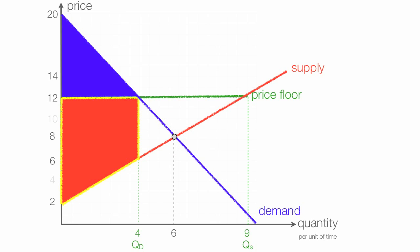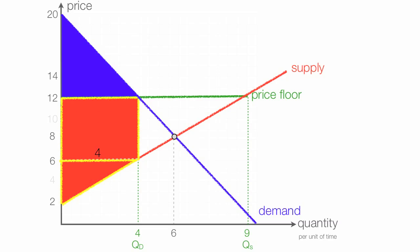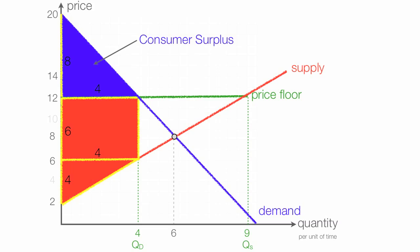I can calculate the area of the triangle, the rectangle, and the other triangle. The base of the triangle is 4, which is quantity demanded. The height of the triangle is 6 minus 2, or 4. The height of the rectangle is 12 minus 6, or 6. And the height of the blue triangle is 20 minus 12, or 8. Consumer surplus is the blue triangle: one-half times 4 times 8, which is 16.